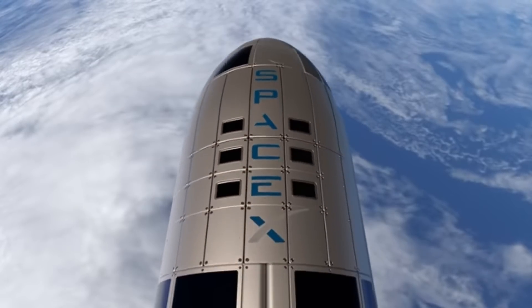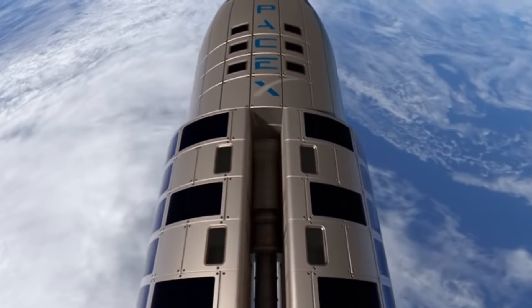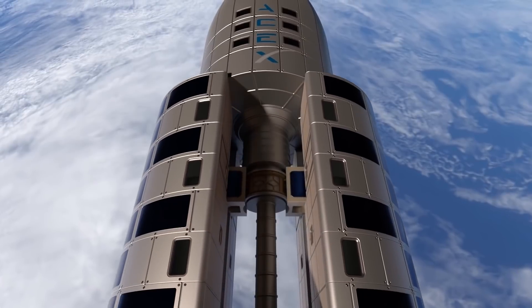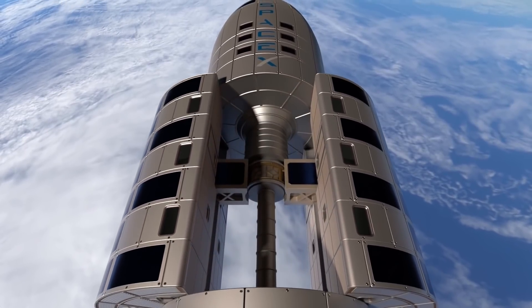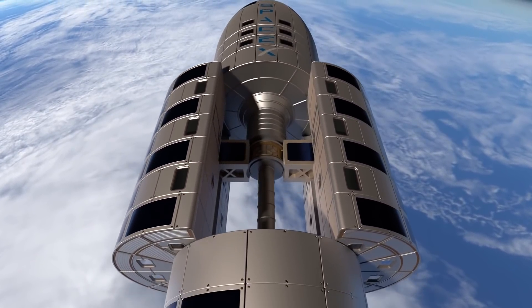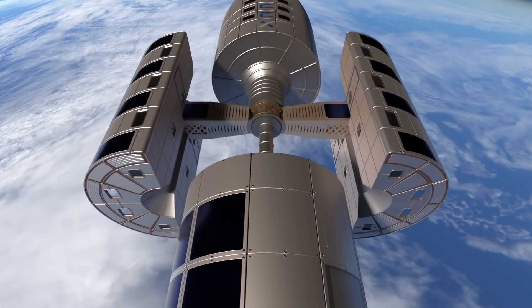And here we see the crew portion of the ship extending out on support columns to start rotation and provide artificial gravity. The only way we have today to produce artificial gravity is to spin something.